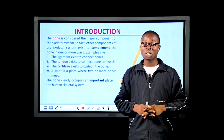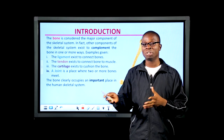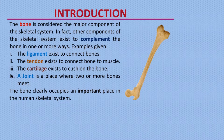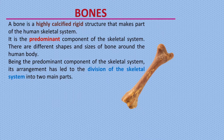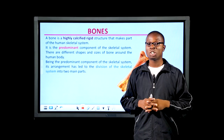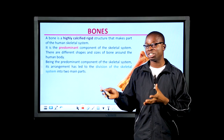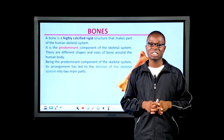The bone is considered the major component of the skeletal system. Other components of the skeletal system exist to complement the bone — for example, ligaments connect bones to bones, tendons connect bones to muscles, while cartilage exists to cushion the bones, and a joint is a place where two or more bones meet. The bone is a highly classified rigid structure that makes part of the skeletal system, is the predominant component, and comes in different shapes and sizes. It is used to classify the skeletal system into two main parts.